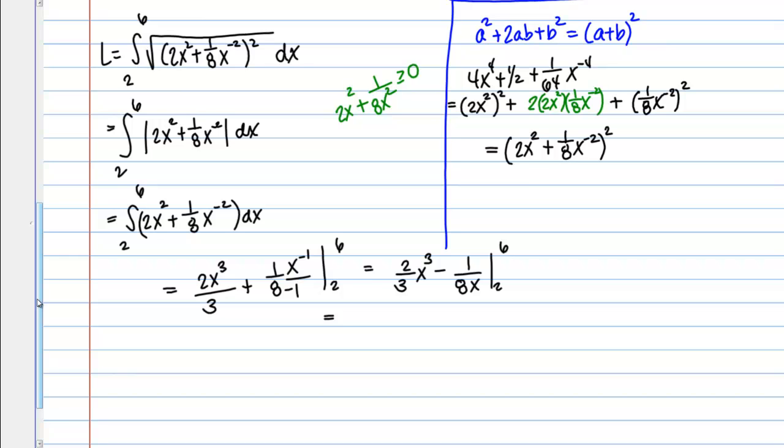So then of course I just plug in my bounds. So if I plug in 6, I get 2/3 times 6 cubed minus 1 over 8 times 6 minus, and then I plug in 2. So 2/3 times 2 cubed minus 1 over 8 times 2.